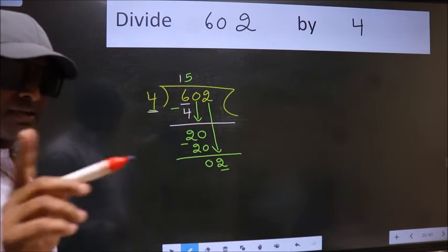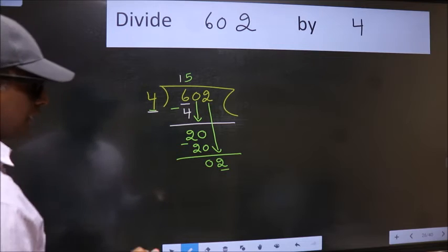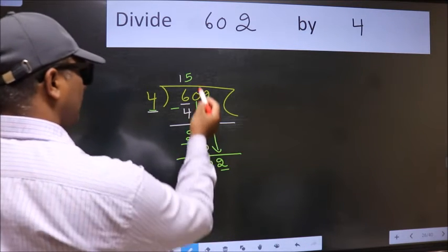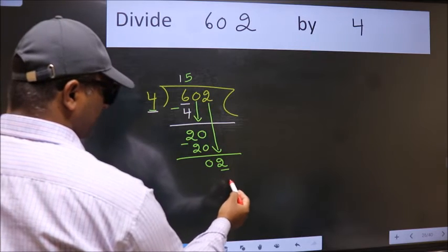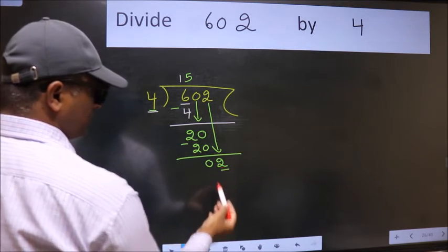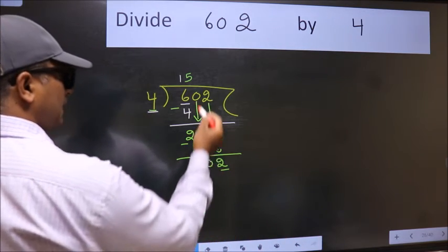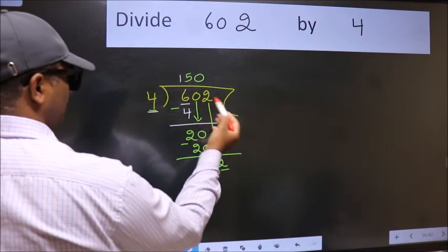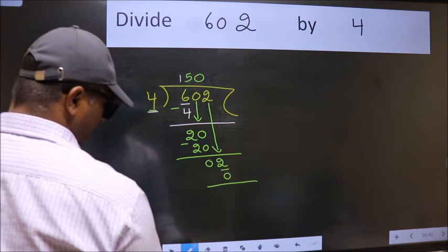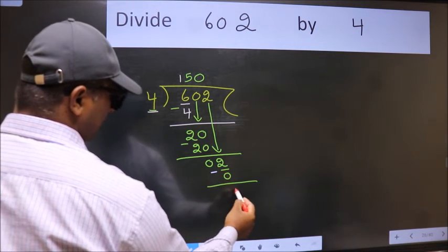Instead of that, what we should think of doing is which number should we take here? If I take 1, we will get 4. But 4 is larger than 2. So what we do is we take 0 here. So 4 into 0, 0. Now we subtract. We get 2.